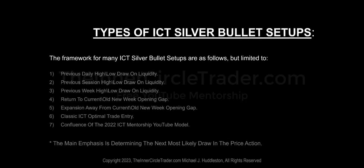Now let's talk about the types of ICT Silver Bullet setups — this is really the gem of this presentation. The framework for many setups includes, but is not limited to: previous day high or low as a draw on liquidity. If we're bullish, buy-side liquidity rests above yesterday's high, so we look for a run to the previous day's high. If bearish, we expect sell-side liquidity below the previous day's low and look for setups that expand down into that liquidity.